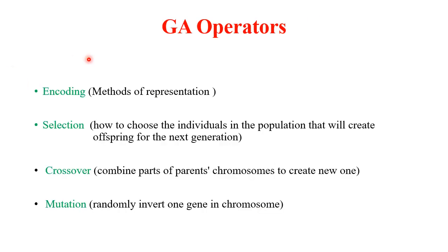Various operations required in genetic algorithms are encoding, selection, crossover, and mutation. Encoding, which we have already discussed, relates to how individuals in the population are represented. Selection means how we can select better parents from the current population to generate offspring for the next generation.